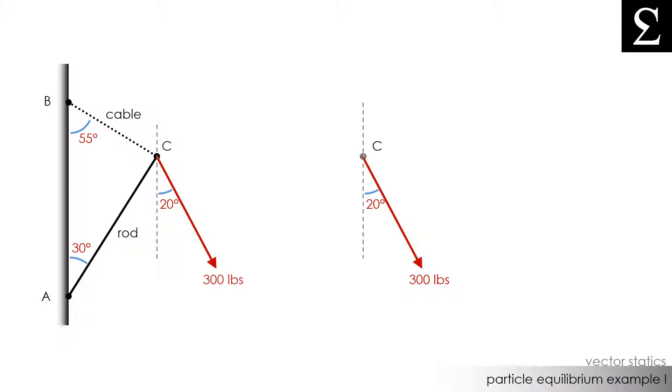Next we know that the cable is pulling on point C so we can draw a force vector which I will call FBC that represents the tension force along line BC. We know the angle that this makes with the vertical is 55 degrees.